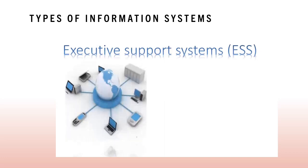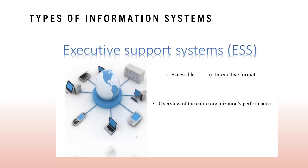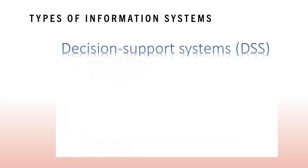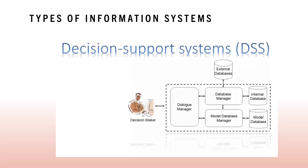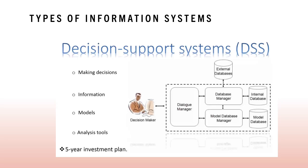First is the executive support system. It serves at the strategic level of the organization, providing top-level executives a readily accessible, interactive format to overview the entire organization's performance. Decision support systems help strategic management staff, like senior officers, in making decisions. The system uses information, models, or analysis tools in order for managers to make simulations and predictions. For example, a five-year investment plan is a decision support system.